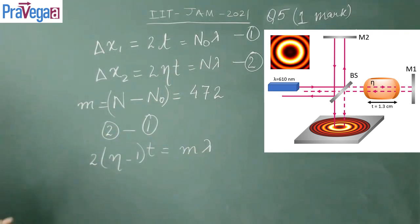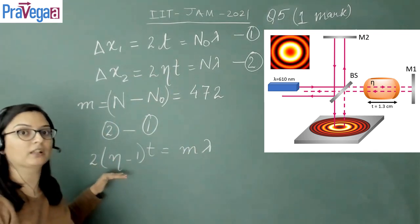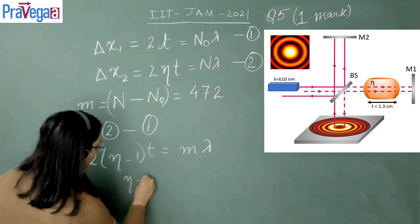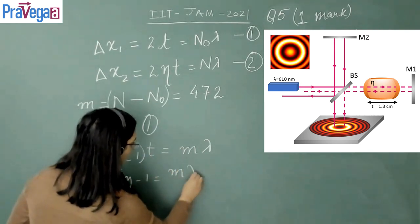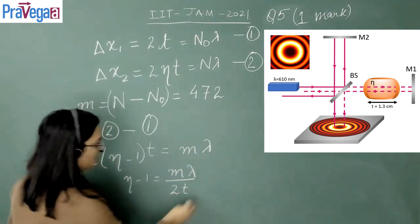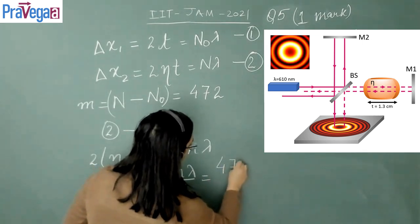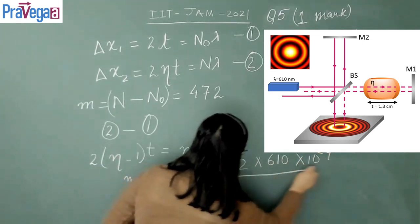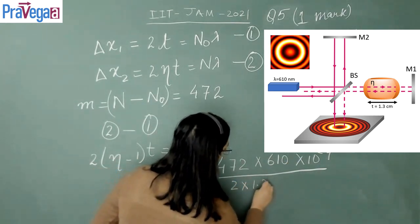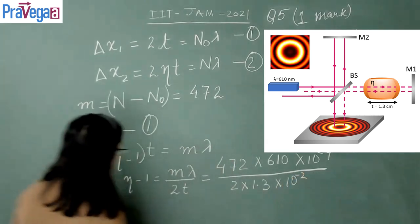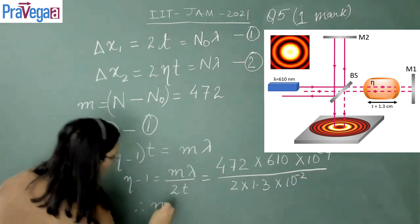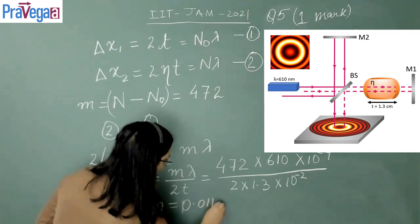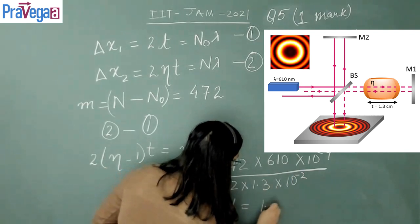Now we only have to solve for eta. We can easily calculate it because all the numbers are there. We have eta minus 1 equals m lambda upon 2t, which is 472 times 610 times 10 to the power minus 9, divided by 2 times 1.3 times 10 to the power minus 2. Therefore, eta equals 0.011 plus 1, which equals 1.011.